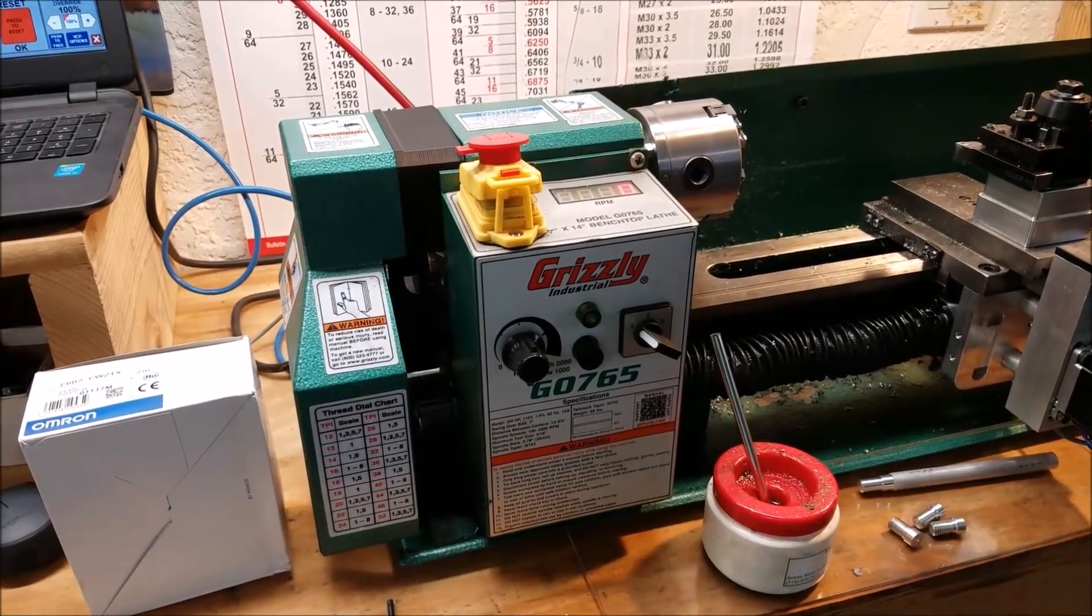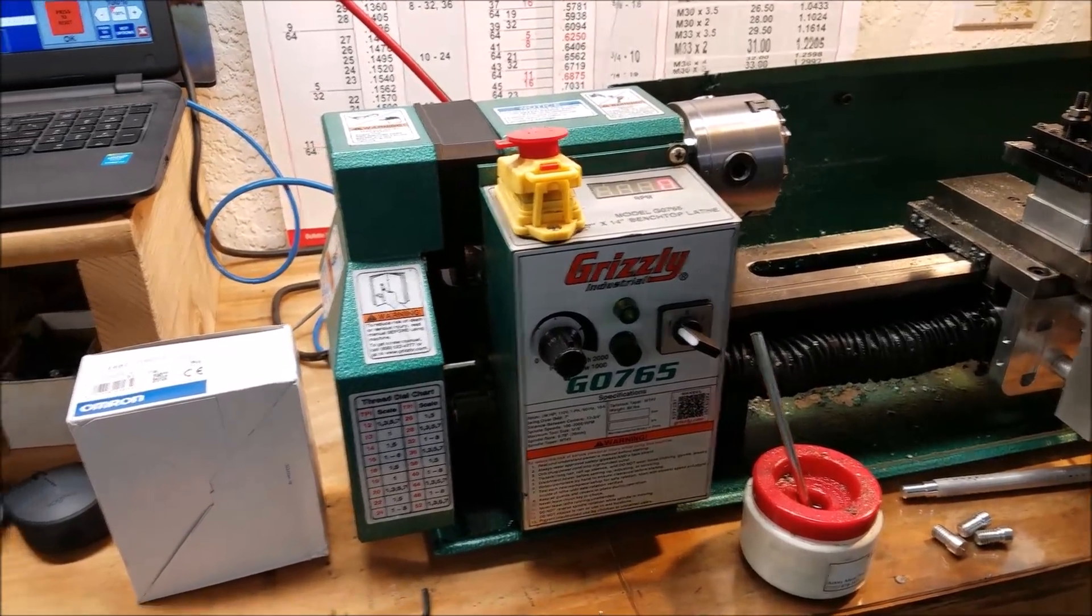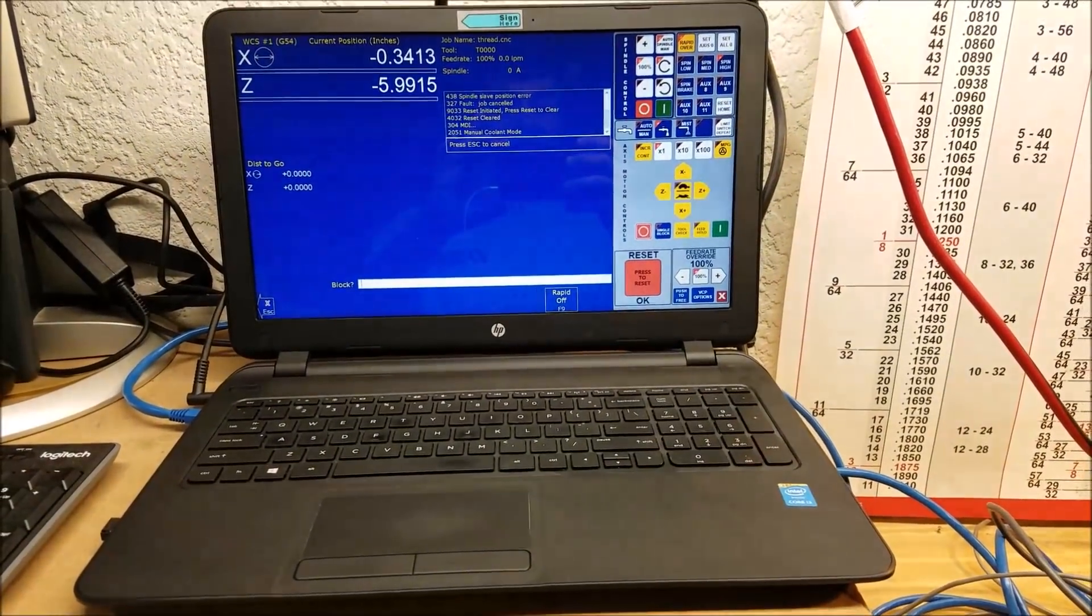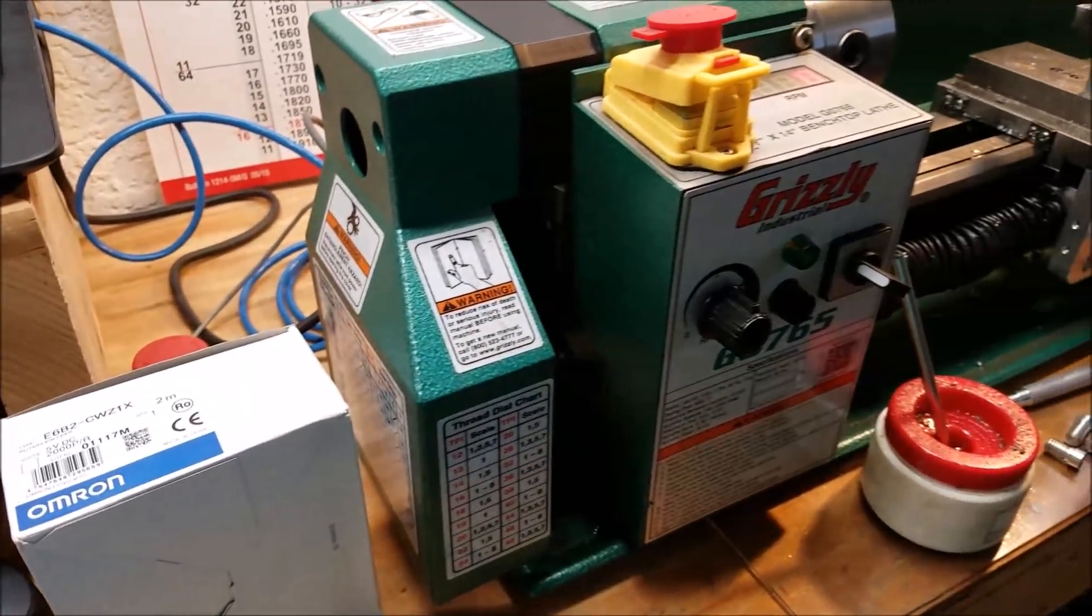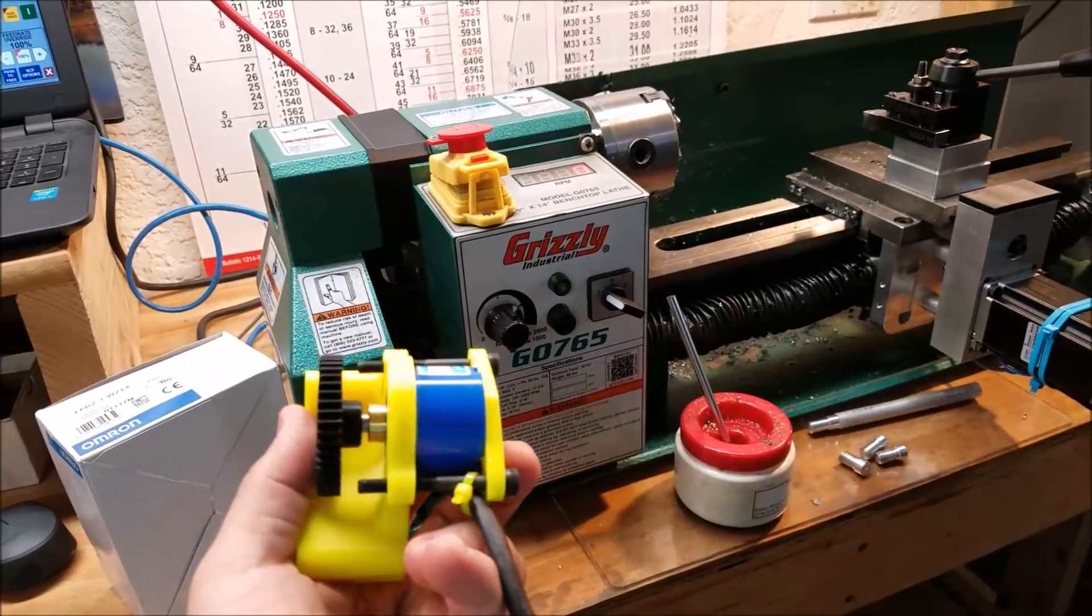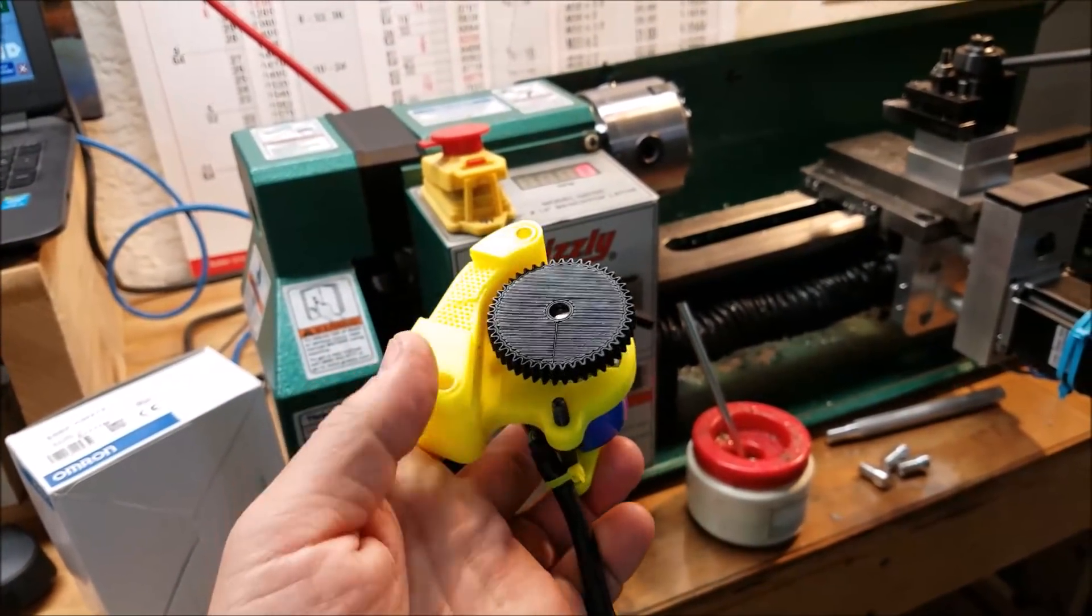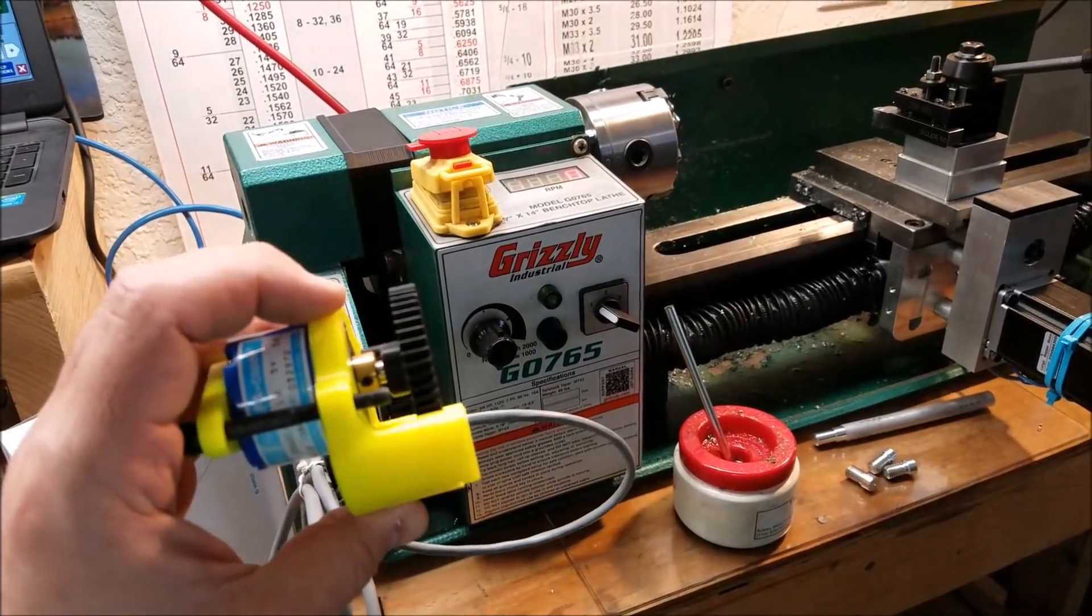Hey guys, this video is about mounting encoders on the mini lathe for use with Centroid CNC12 software. In a previous video, I had this Tamagawa encoder. I made a little bracket, 3D printed it, 3D printed a gear, and just hooked this thing onto the lathe using some existing holes.